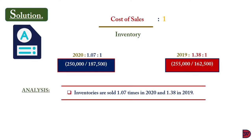Looking at the two years, the turnover dropped from 1.38 in 2019 to 1.07 in 2020. The inventory increased while the cost of sales dropped, meaning their pricing increased which made it unattractive for customers, or their sales and marketing system was ineffective, or something happened that drew customers away, or economic conditions caused the business not to experience the level of sales they expected.